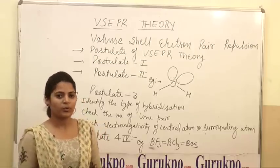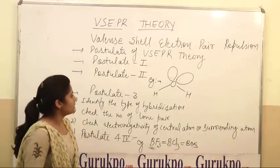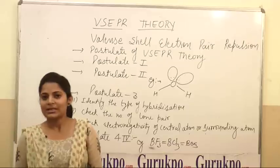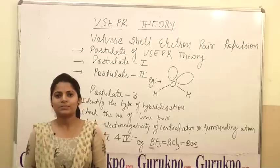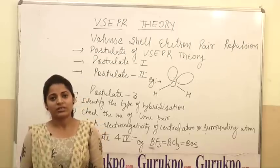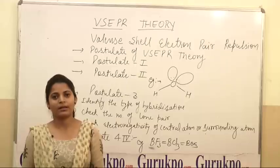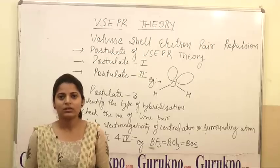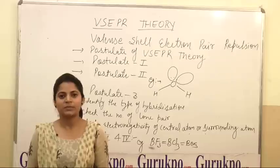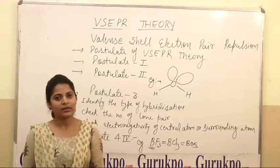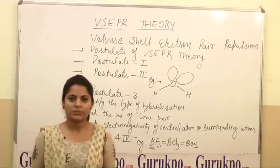Now we study about the postulates. Postulate 1: if all the electron pairs around the central atom are bond pairs and there is no lone pair present, then the shape is identified by the hybridization. For example, for SP hybridization the shape is linear, for SP2 it is triangular planar, and for SP3 it is tetrahedral.